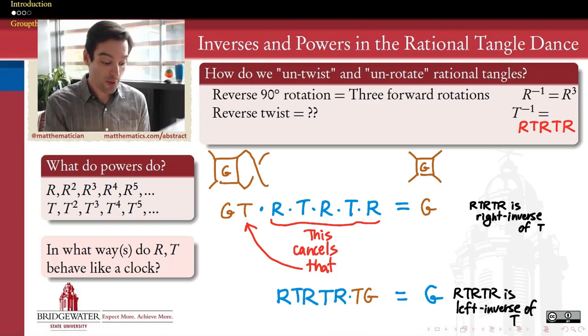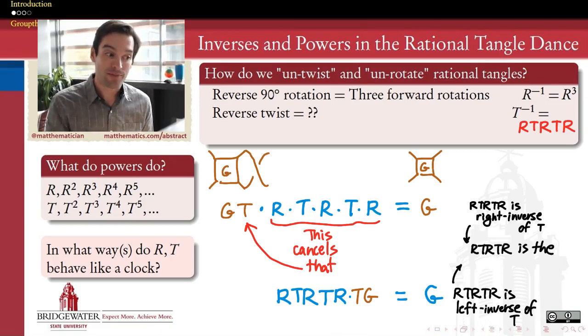And because this element is both the right inverse and the left inverse, we'll say that it's a two-sided inverse of T.